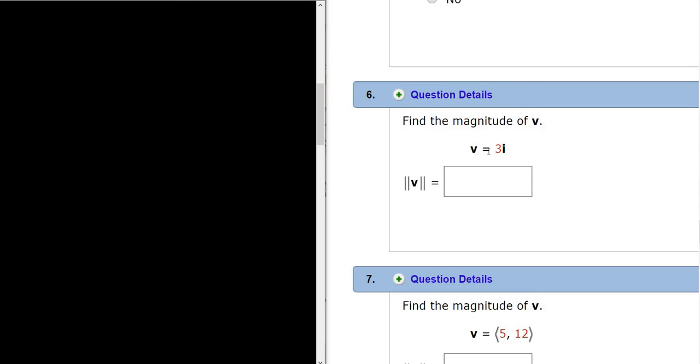In this video, we have to find the magnitude of v, where v is equal to 3i. v is a vector, so you can use the arrow notation, and it's equal to 3i.